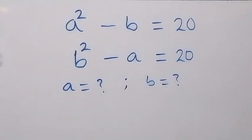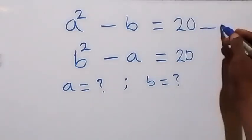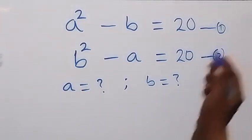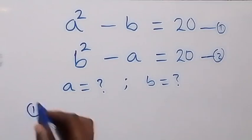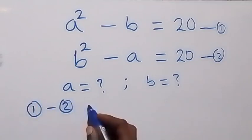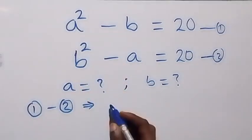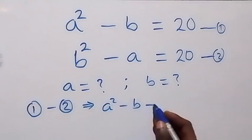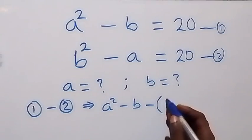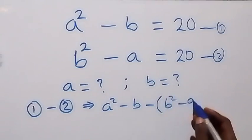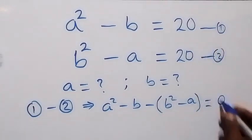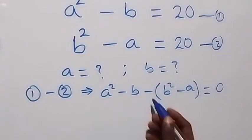Hello, you are welcome. How to solve for a and b in this system of equations. Let's label this as equation 1 and equation 2, and let's subtract equation 2 from equation 1. On the left-hand side of equation 1 we have a squared minus b, then minus the left-hand side of equation 2 which is b squared minus a, which equals 20 minus 20, which equals zero.